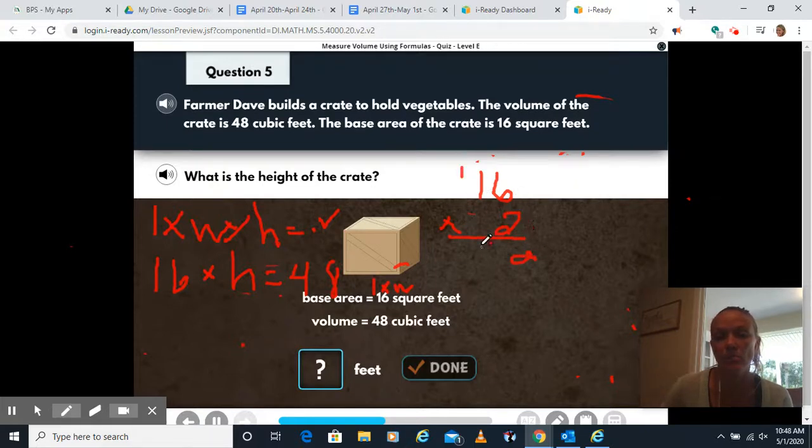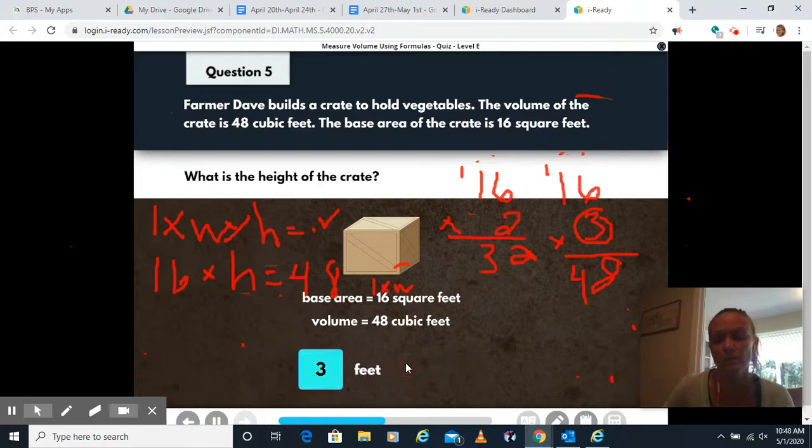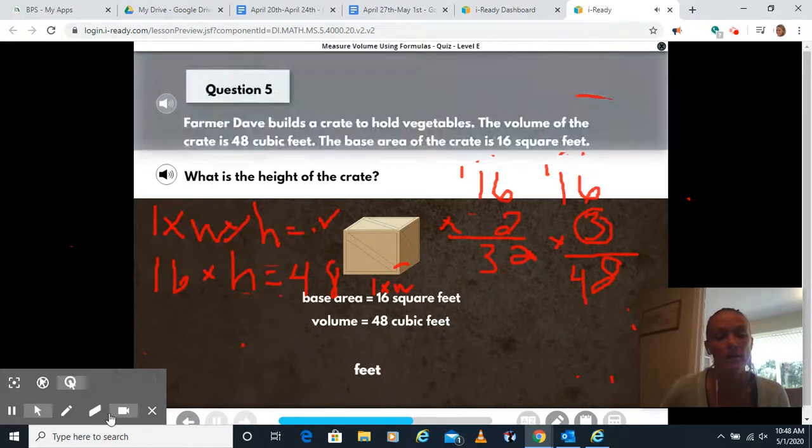2 times 6 is 12. Carry the 1. 2 times 1 is 2 plus 1, 32. That's too small, but it's close. So I'm going to try 16 times 3. 3 times 6 is 18. That's a good start. 3 times 1 is 3 plus 1 is 4. So our height that we're missing is 3. Put the 3 in there. Click done.